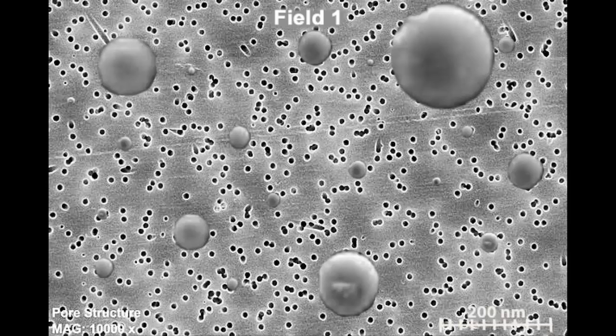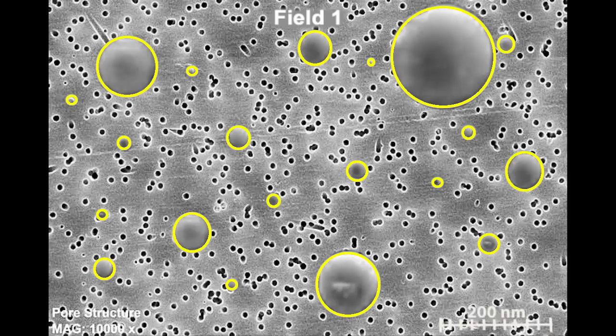For this activity, split the class into pairs or small groups, each one with an SEM field of view similar to the image shown here. The particles are white and gray spheres, and they are collected on a polycarbonate filter membrane perforated by small holes that appear black on the image. There should be approximately 20 particles on each image.